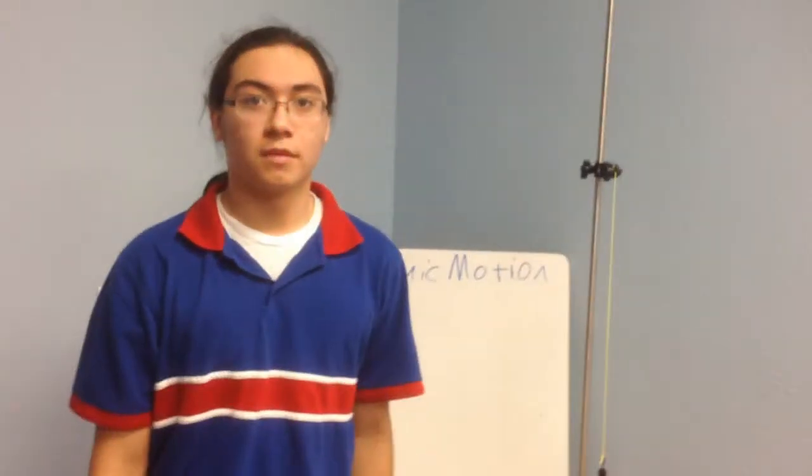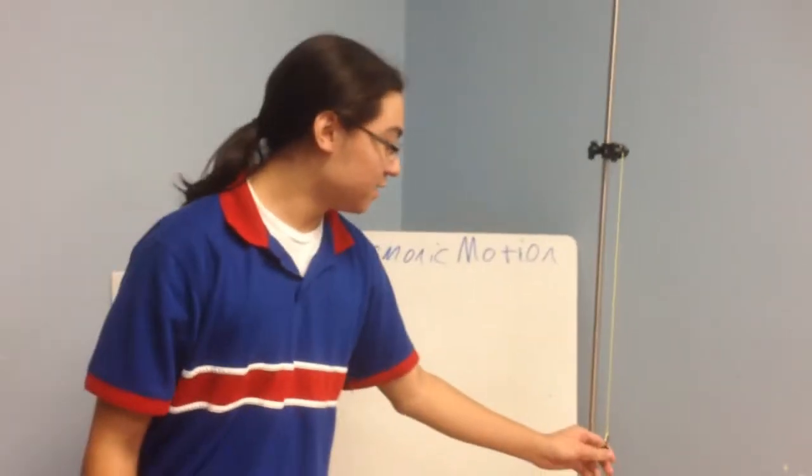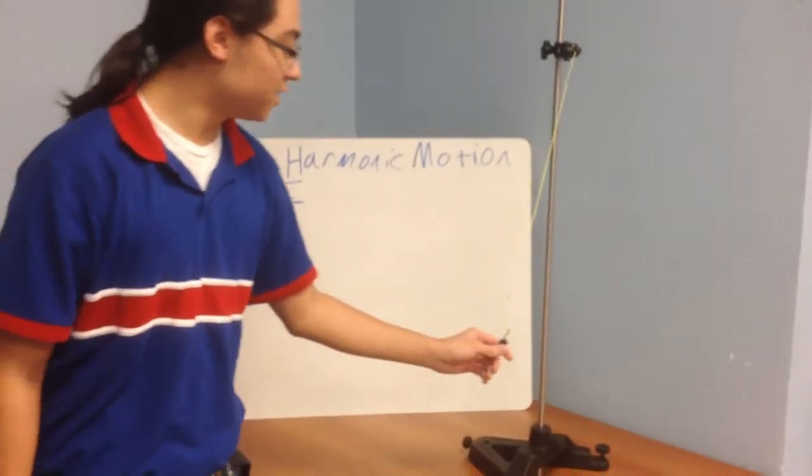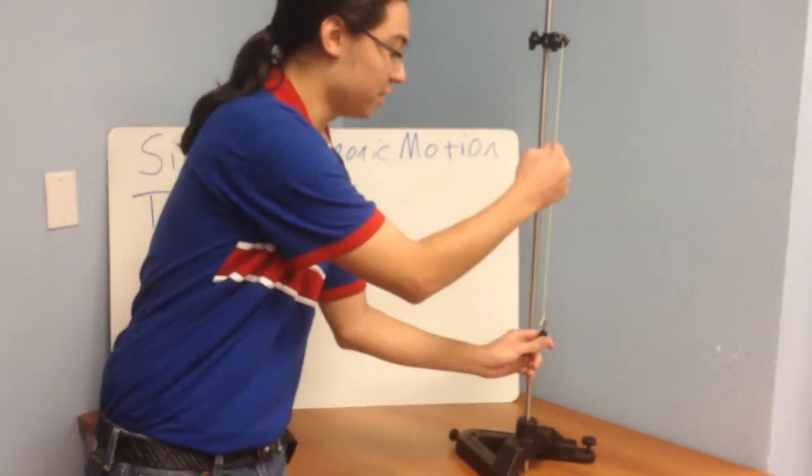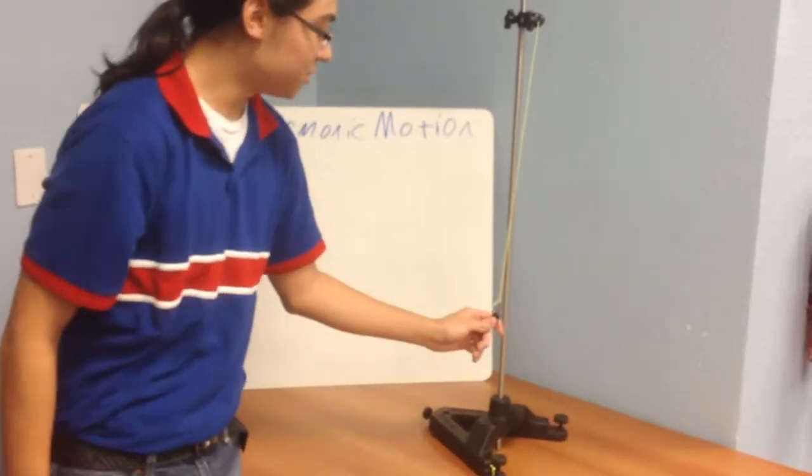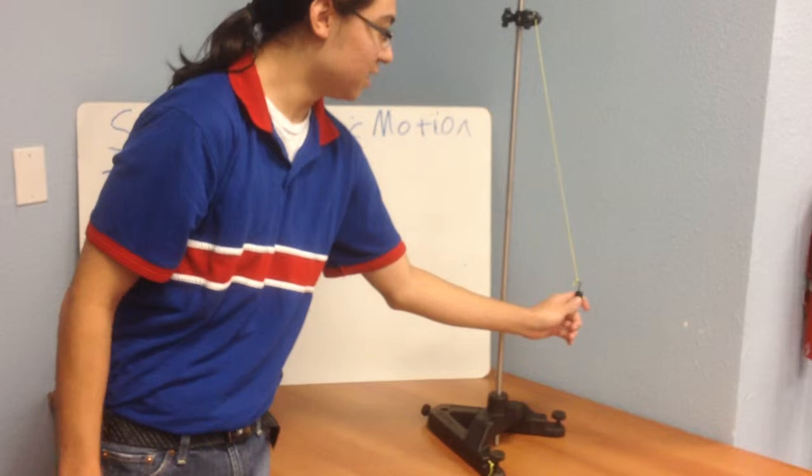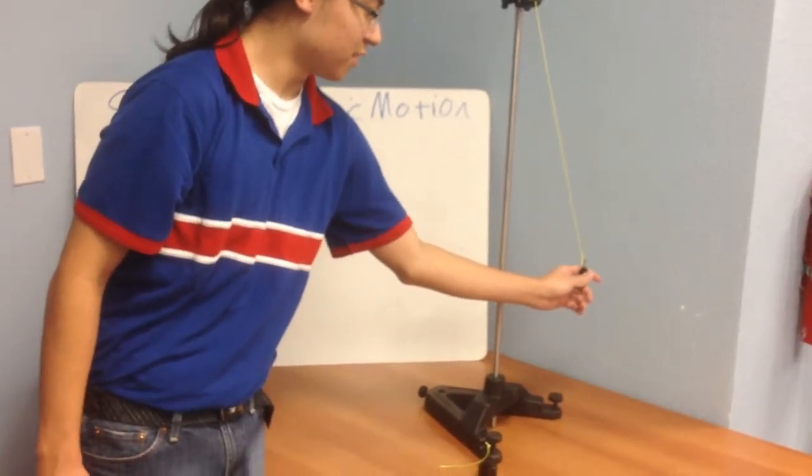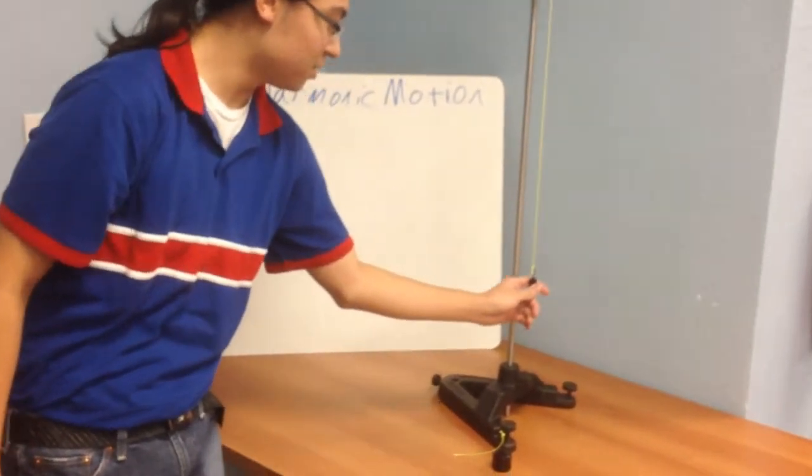The reason a pendulum bob stops is that the component force of gravity pushes it to the equilibrium point. The equilibrium point is the middle or the center of the pendulum and it pushes it back to the other side. And once it does this, a component of force of gravity again pushes it to the equilibrium point.